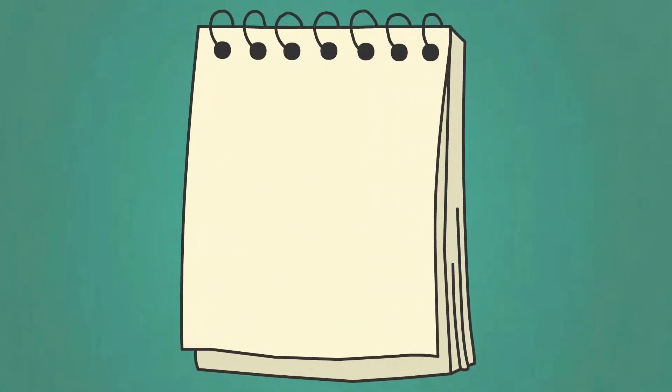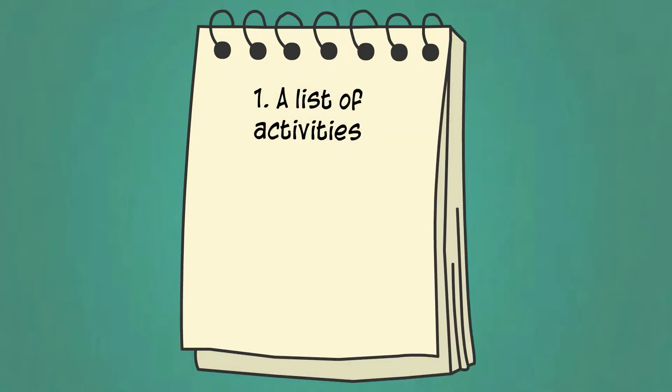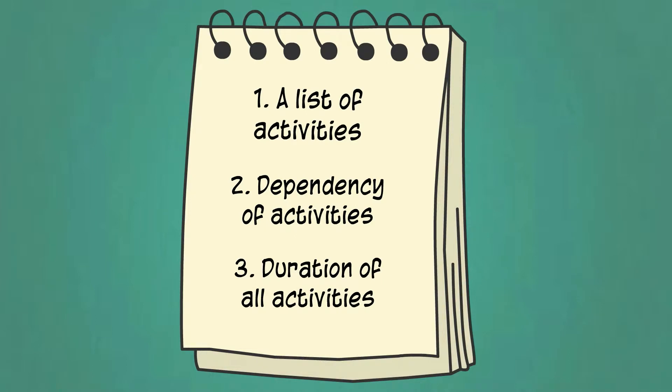To start, you need to know three things. Firstly, a list of all the activities that need to take place in order to complete the project. Secondly, which activities are dependent on each other. And thirdly, the duration it takes for each activity to individually be completed.